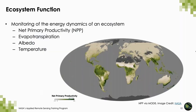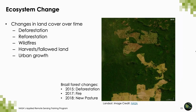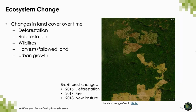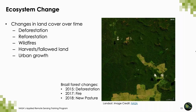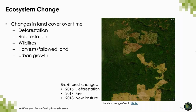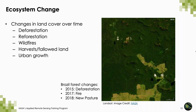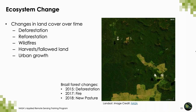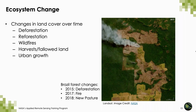Remote sensing can also be used to understand ecosystem function — essentially the measurement of energy dynamics within an ecosystem. These types of variables include things like net primary productivity, or NPP, evapotranspiration, albedo, or temperature. Ecosystem change is particularly important for conservation and biodiversity research. The evaluation of changes from forest to non-forest is one of the most common change metrics, and you can see an animation of this from Brazil. Other landscape changes such as burned area from wildfires, agricultural activities, and urban growth are important variables that can be monitored via remote sensing.